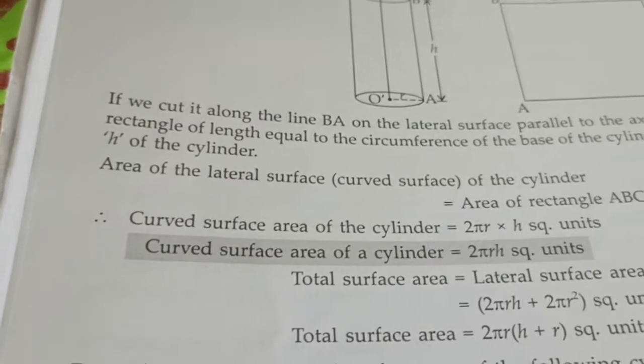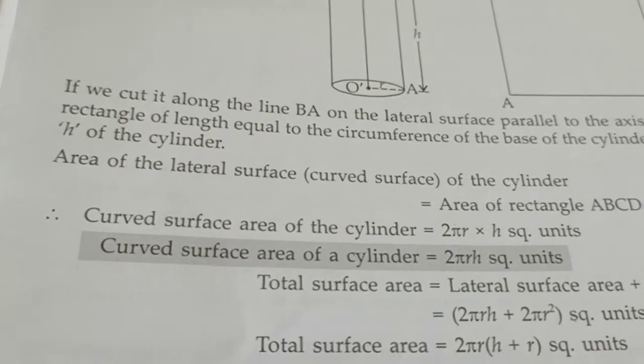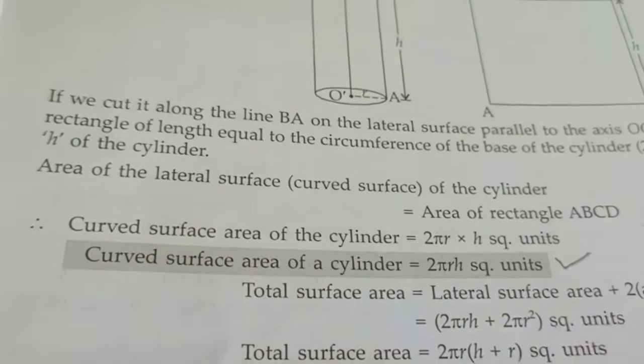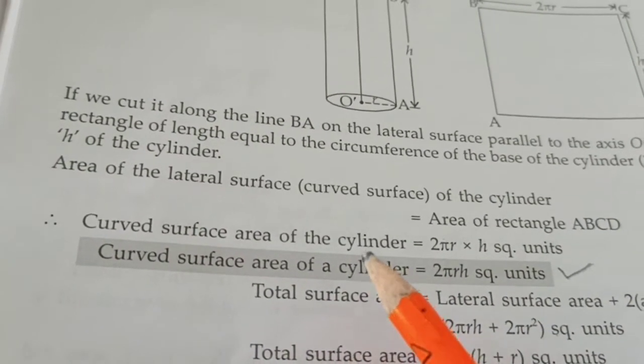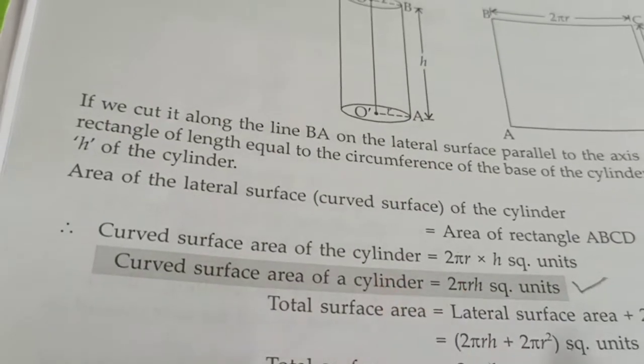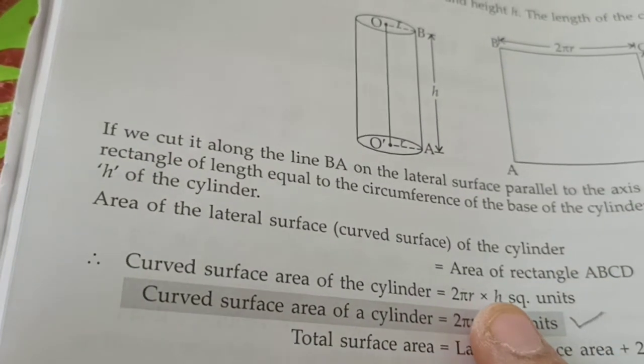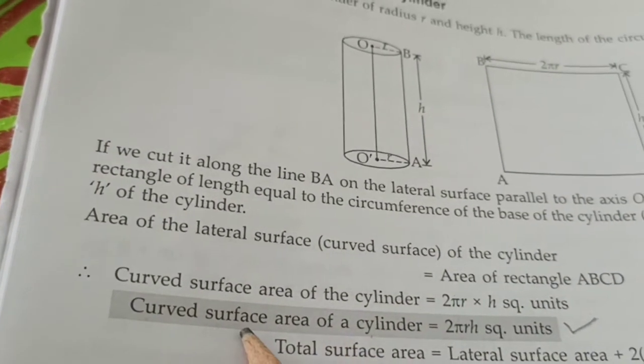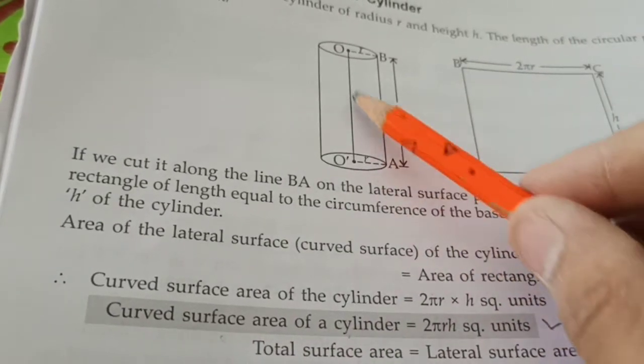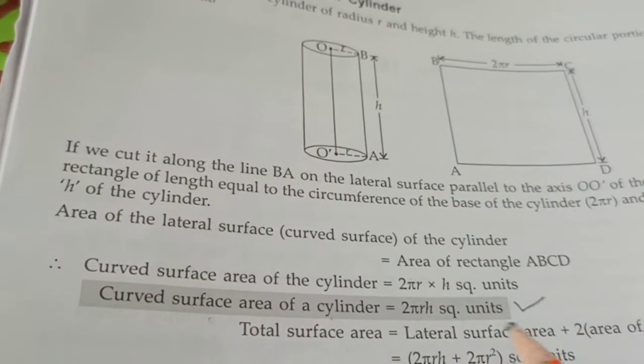Curved surface area of a cylinder is equals to 2πRH. See cylinder का circle का हम क्या find करते थे circumference वो क्या होता है 2πR. अब क्या हो गया curved surface area of a cylinder, यहाँ पे क्या बढ़ गया height so 2πRH.